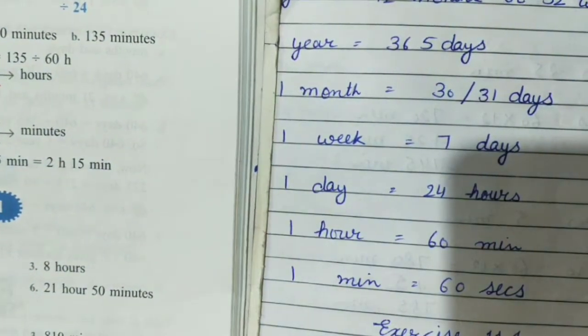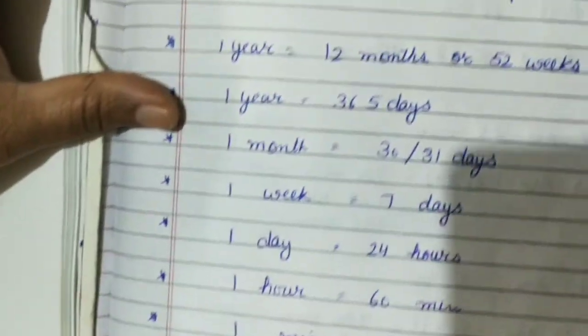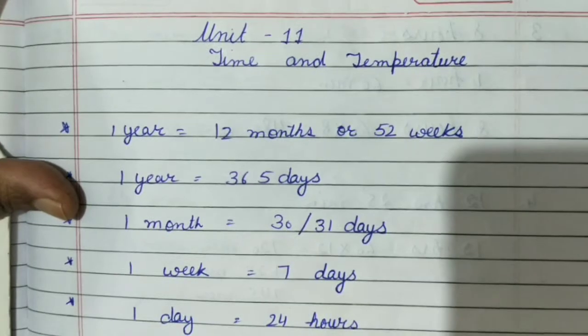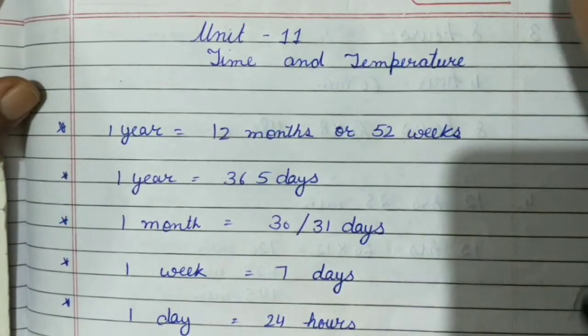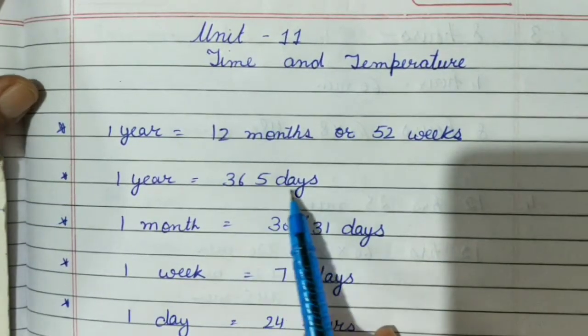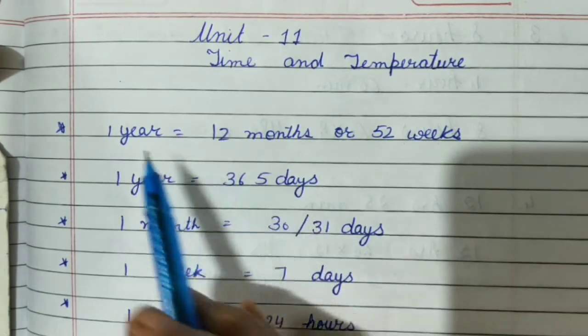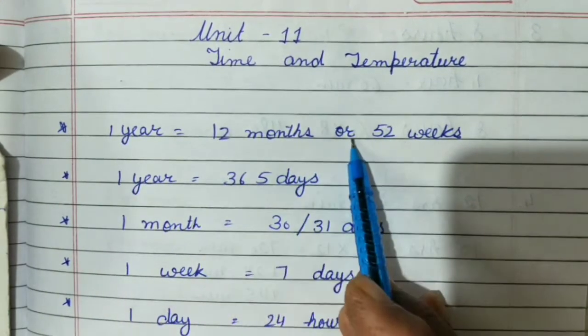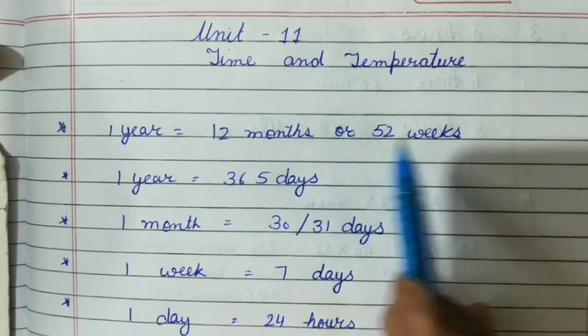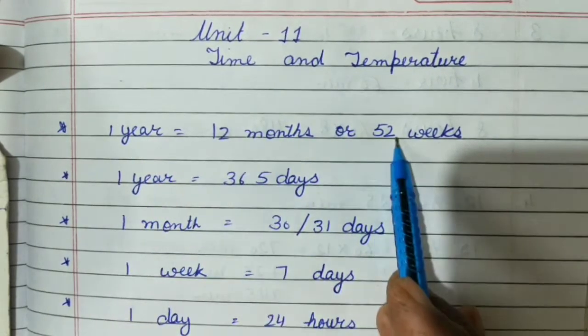As you know, in one year, how many days? 365 days, or you also know in one year there are 12 months or 52 weeks. In a year there are 52 weeks.